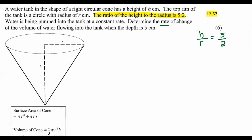Water is being pumped into the tank at a constant rate. Determine the rate — there we go. That means gradient or first derivative. Determine the rate, which is the gradient or first derivative of the volume of the water flowing into the tank when the depth is five. So they're giving us the height. If this was an optimization question, they would have said determine the value of the height such that the volume is a maximum or minimum. But now they're saying determine the rate.